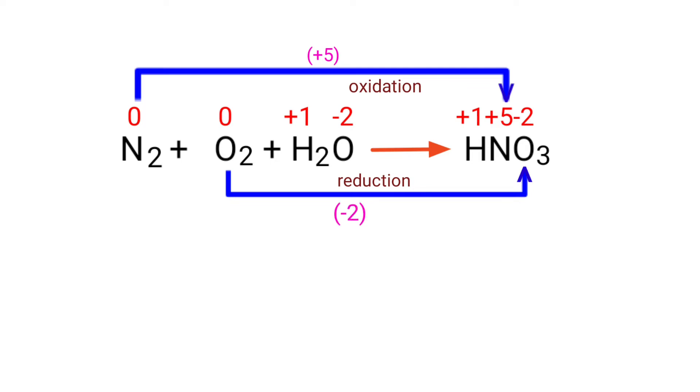In the N2 element there are 2 nitrogen atoms present, so total increase in oxidation number is plus 10. In the O2 element there are 2 oxygen atoms present, so total decrease in oxidation number is minus 4.